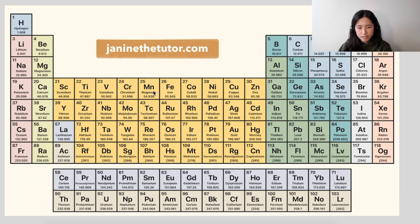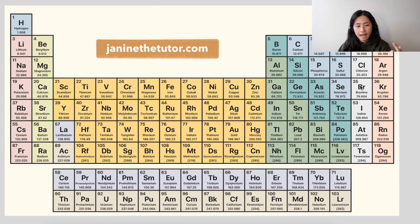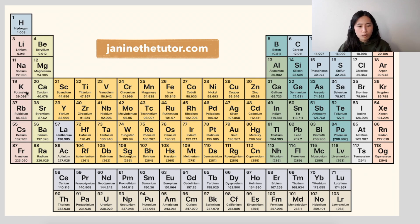Bromine is found at N=4. So you're going to see that you have 4S2, 3D10 — remember this is your D subshell — and then 4P5 for bromine. So looking at N=4, your valence is N=4 because that's the highest energy level, as opposed to the 3D shell.